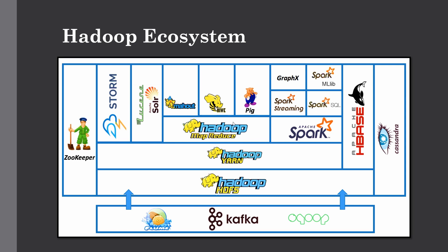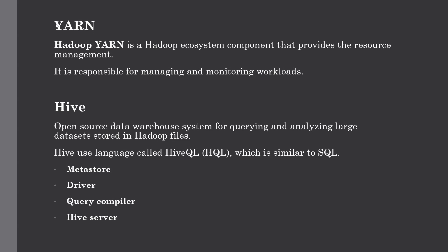MapReduce needs the help of another component in the Hadoop ecosystem — Hadoop YARN, which is a resource negotiator. YARN stands for Yet Another Resource Negotiator. It is a Hadoop ecosystem component which provides resource management tasks and is one of the most important components of the Hadoop ecosystem. It is responsible for managing and monitoring workloads and allows multiple data processing engines such as real-time streaming as well as batch processing to handle data stored on a single platform.